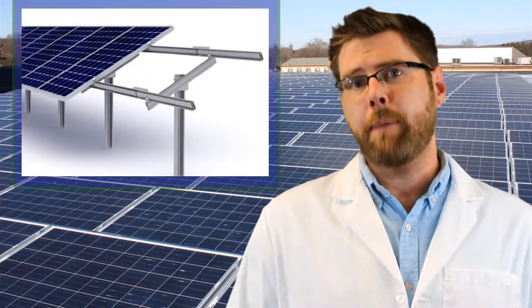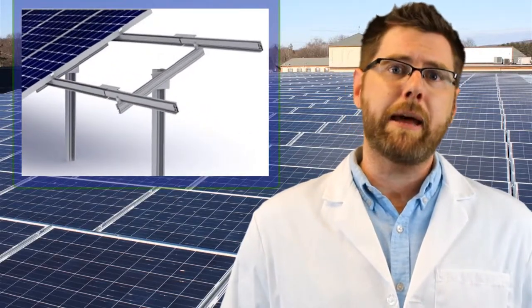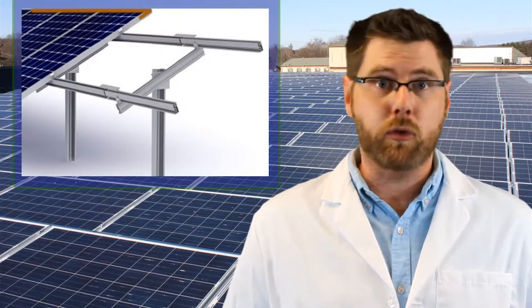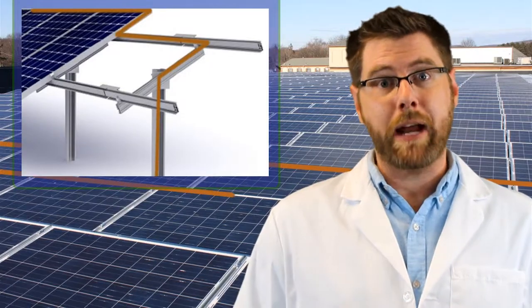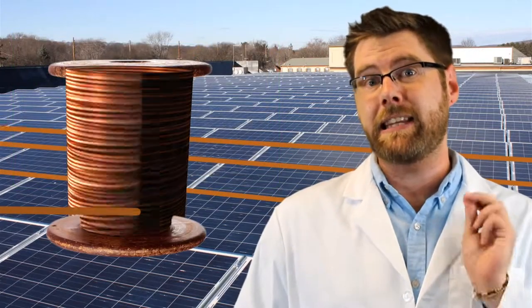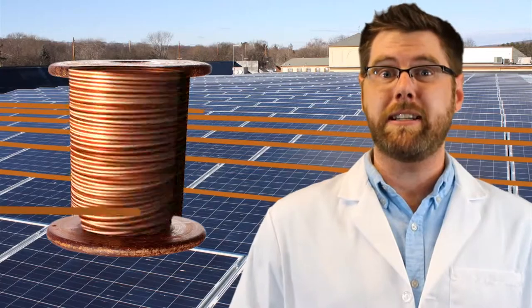Traditionally, grounding is accomplished by running a copper wire to every exposed piece of metal on a PV array. That includes your racking system and your module frames. That copper wire is attached to racking and module frames via a lug. This can be time and labor intensive and does require a lot of copper wire.